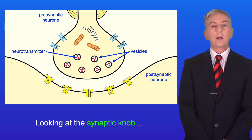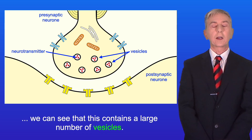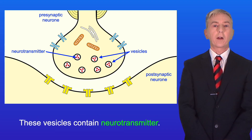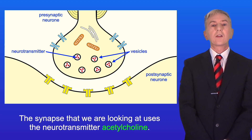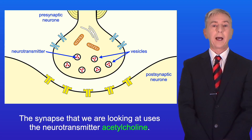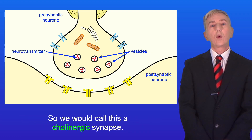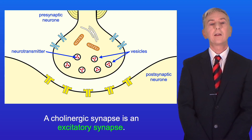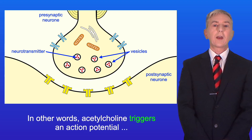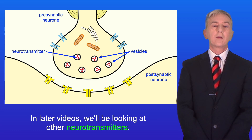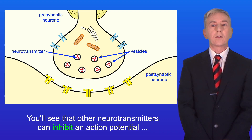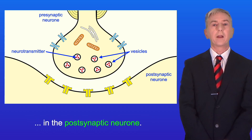Looking at the synaptic knob, we can see that this contains a large number of vesicles. These vesicles contain neurotransmitter. Now there are several different neurotransmitters. The synapse that we're looking at uses the neurotransmitter acetylcholine, so we would call this a cholinergic synapse. A cholinergic synapse is an excitatory synapse — in other words, acetylcholine triggers an action potential in the post-synaptic neuron. In later videos we'll be looking at other neurotransmitters that can inhibit an action potential in the post-synaptic neuron.